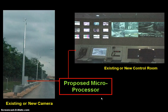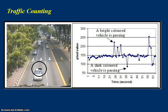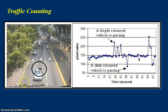Here is an example of how we count traffic. We observe a few pixels in the video image. This shows the pixel intensity — if no vehicle is on the road, the pixel intensity is relatively stable. Once a bright car passes through the area, the intensity goes up. If a dark vehicle passes through, the intensity becomes lower. We can write a program to count these changes in pixel intensity.